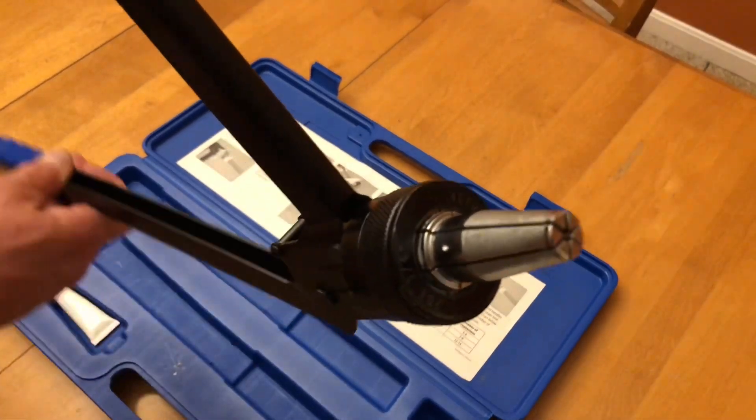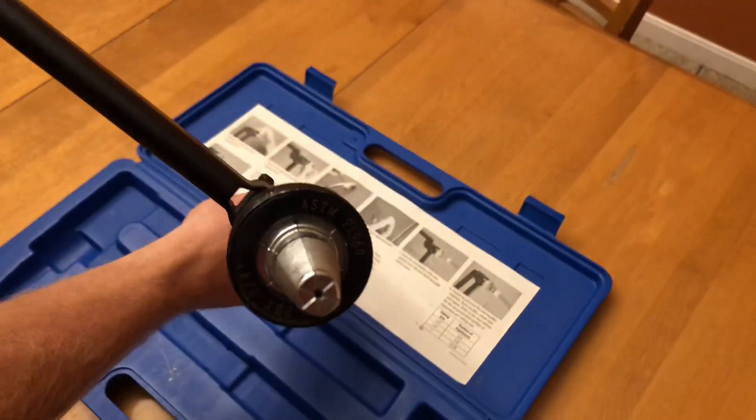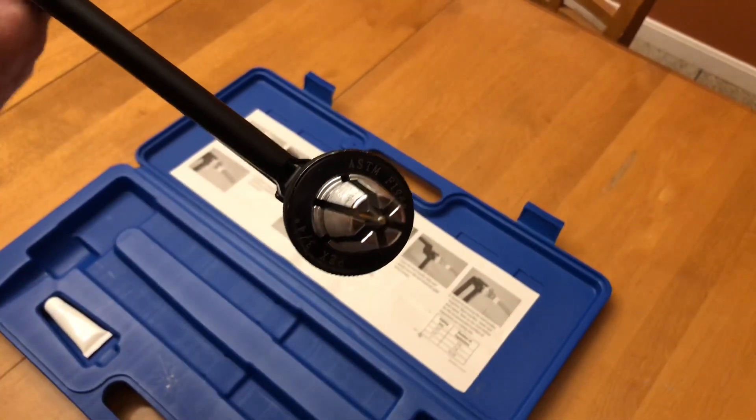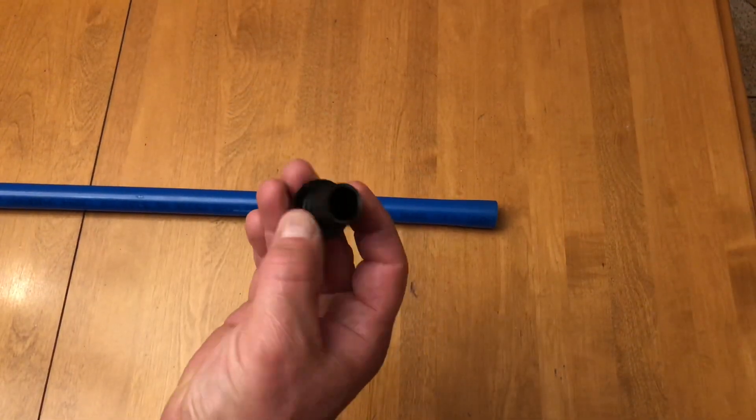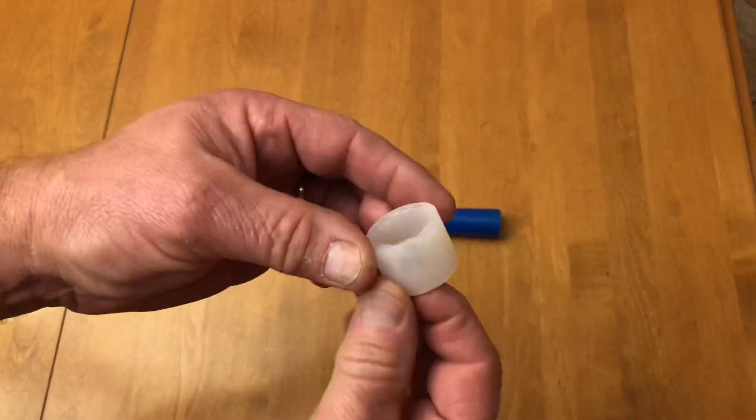You can see that the six different jaws will expand out as I work the tool back and forth. So I've got my tubing here. Here's a piece. I'm going to put a cap on there and I'll need my Propex ring as well.